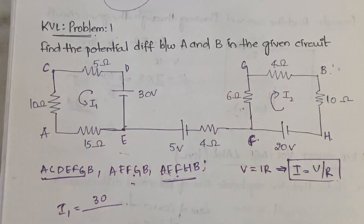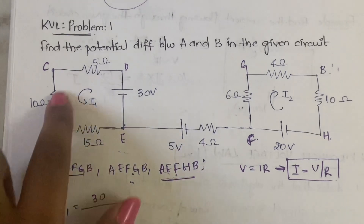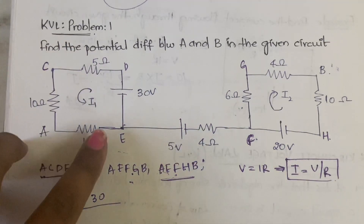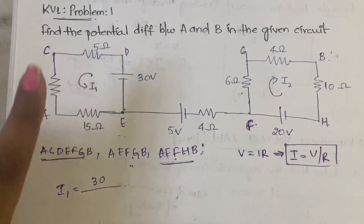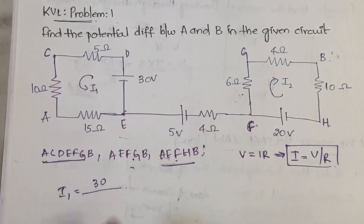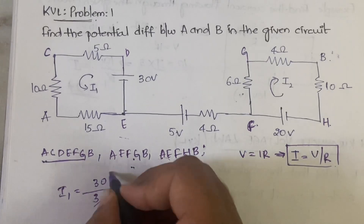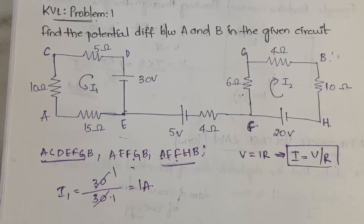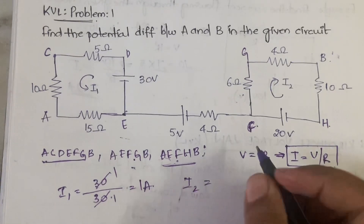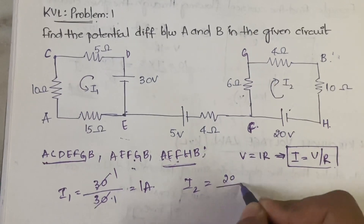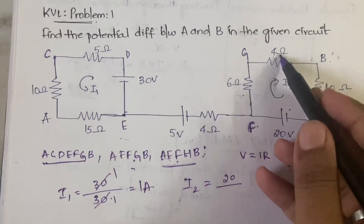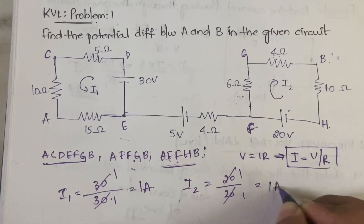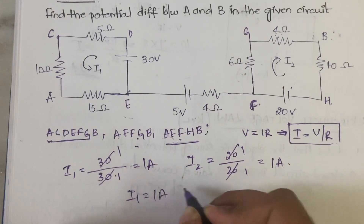To calculate the equivalent resistance, identify whether the resistors are in series or parallel. Since there are no breaks in between, all three resistors are in series: 15 + 10 + 5 = 30 ohms. So I1 = 30/30 = 1 amp. For I2, there is also only one voltage source: 20V, with resistors 6 + 4 + 10 = 20 ohms in series, giving I2 = 20/20 = 1 amp.